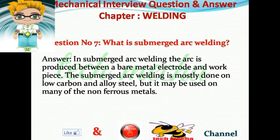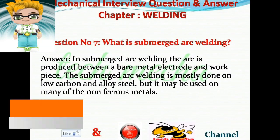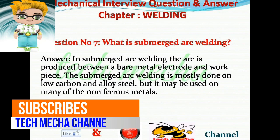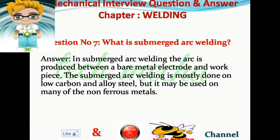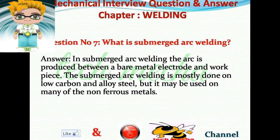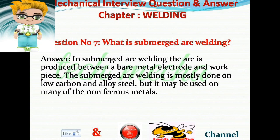Question number seven: What is submerged arc welding? Answer: In submerged arc welding, the arc is produced between a bare metal electrode and the workpiece. Submerged arc welding is mostly done on low carbon and alloy steel, but it may also be used on many non-ferrous metals.